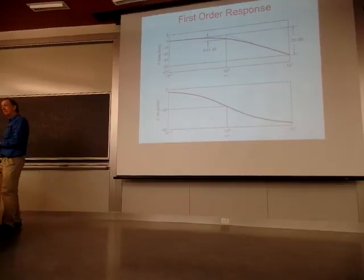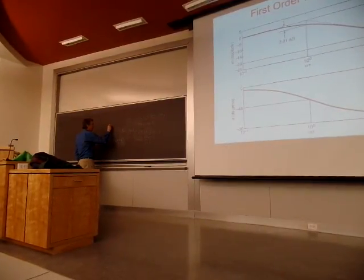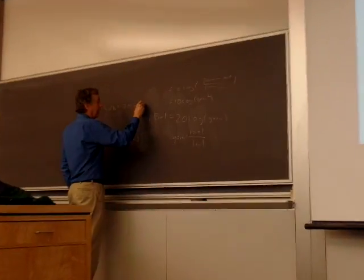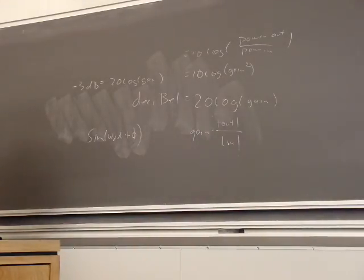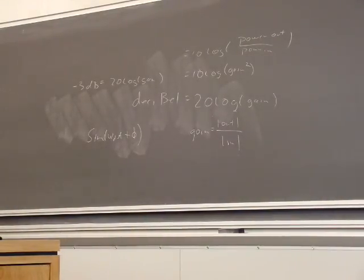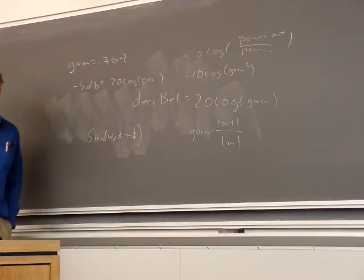What's 3 dB? A bit better than this. 3 dB, you know, 20 times the log gain. What is 3 dB? What's the gain? That's 0.707.